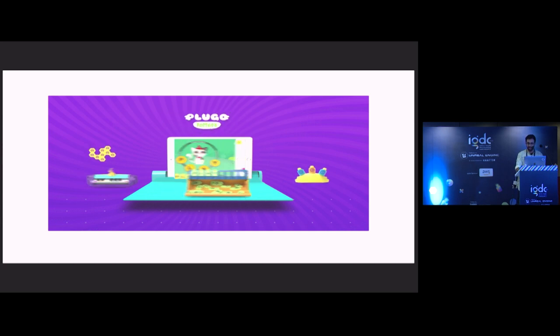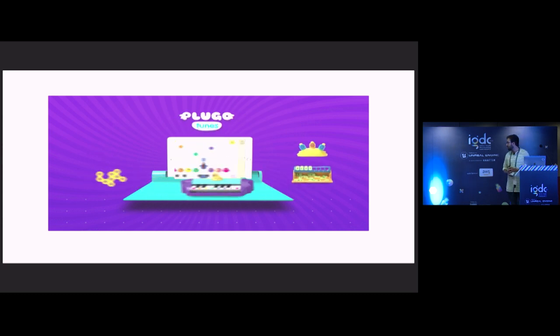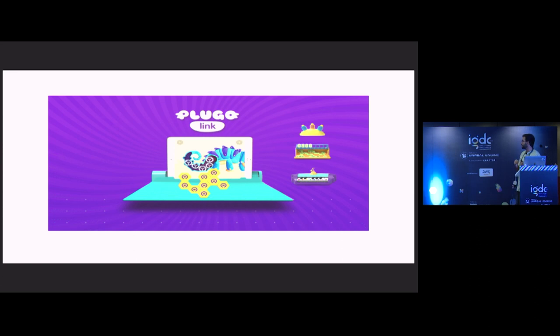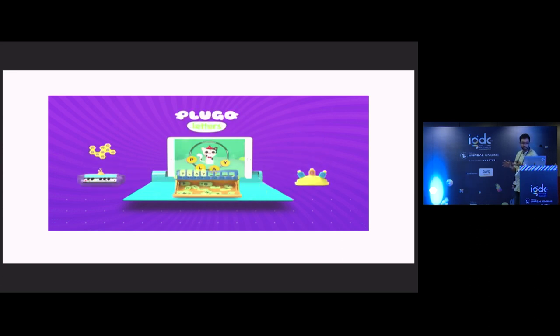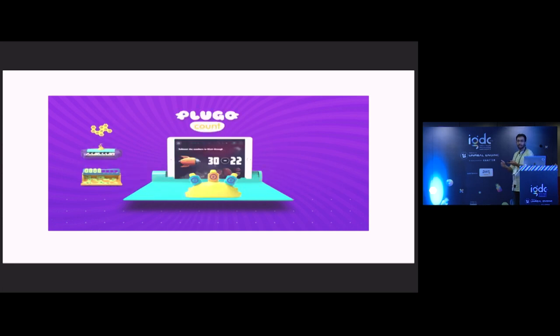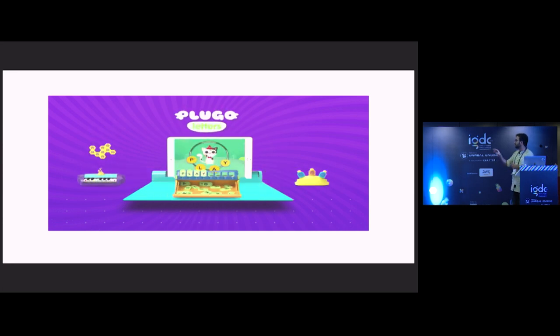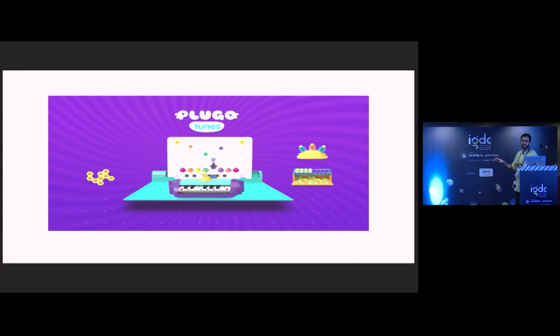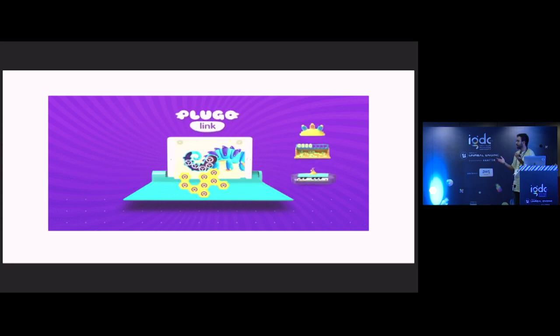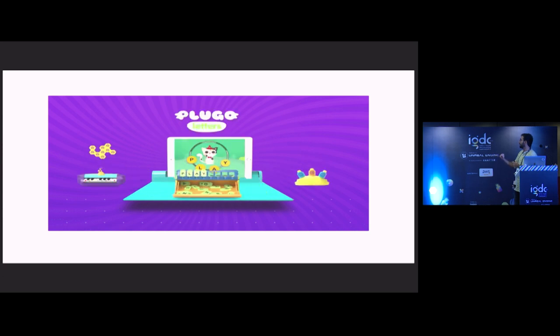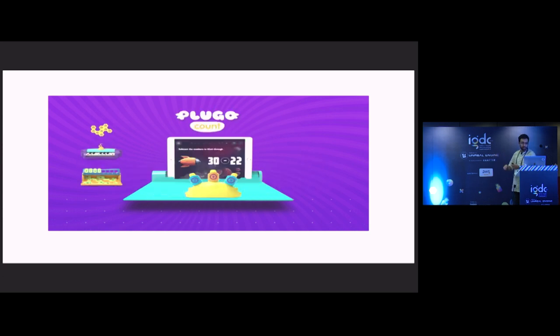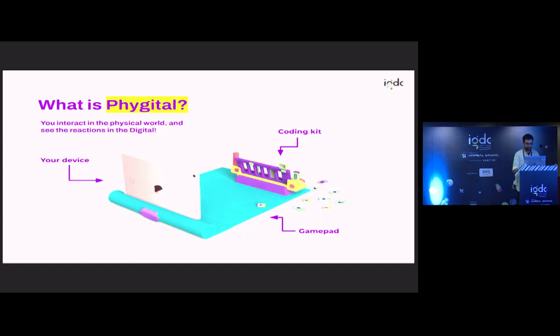The kit we'll be talking about today is called Plugo. Plugo is a setup where you have the gamepad and the iPad in front of you. These controllers are mapped to different subjects. You can see on screen you have a music one, a letters one, we have a count one. And today's talk will be about the coding kit.